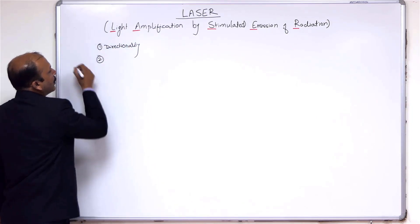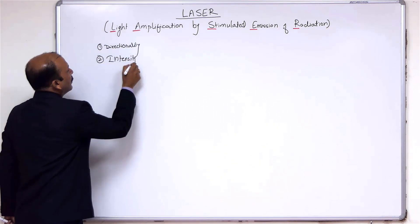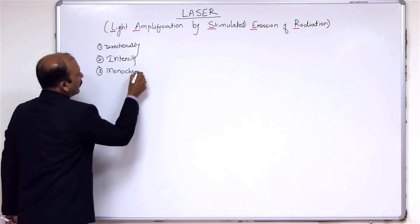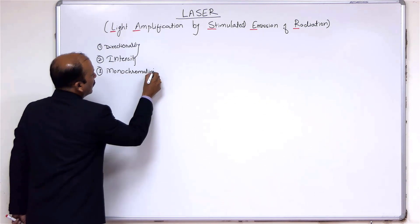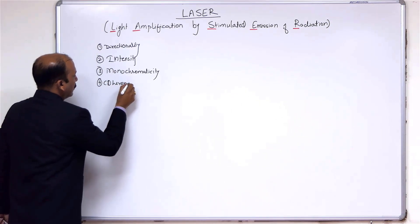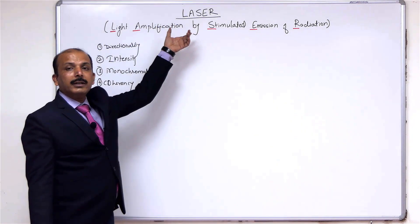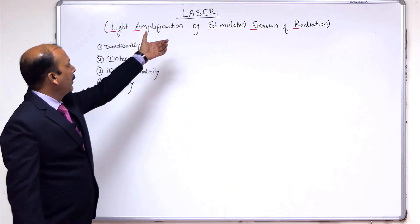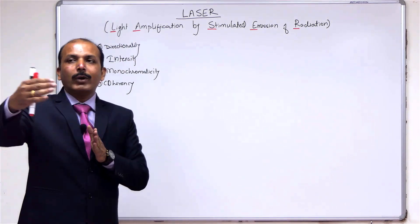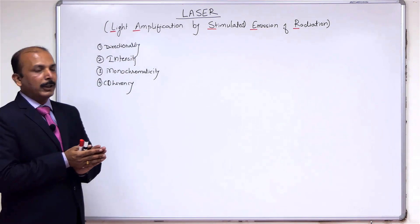The first property is directionality, the second is intensity, the third is monochromaticity, and the fourth is coherency. These four unique properties are associated with laser. We can compare laser and ordinary light sources by these properties. Light emitted by laser travels in one single direction only, but light from an ordinary source is emitted in all possible directions.